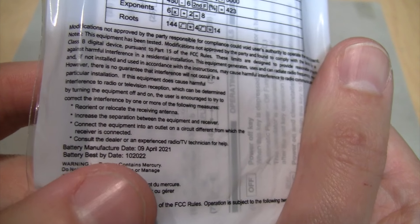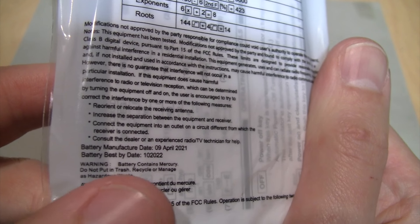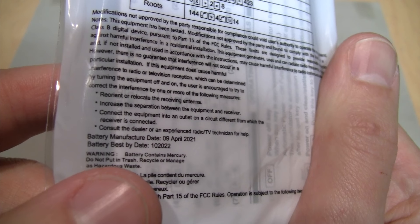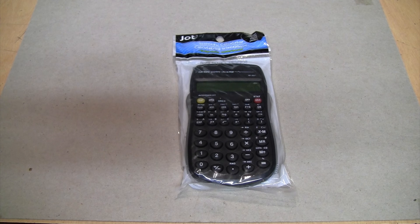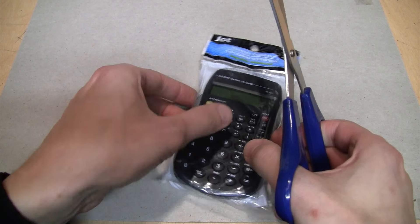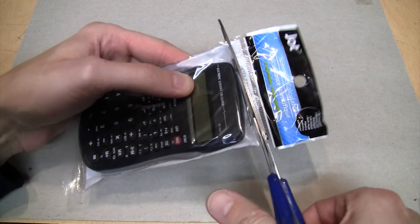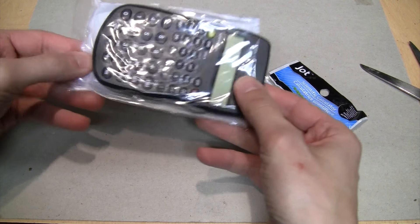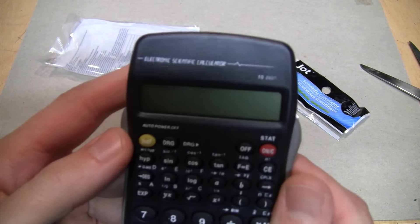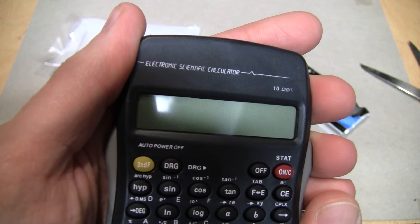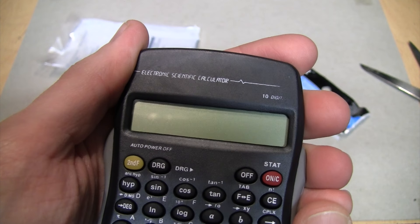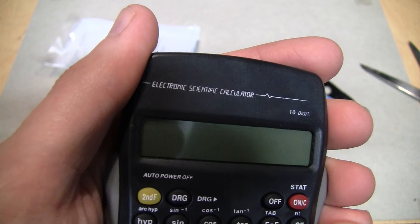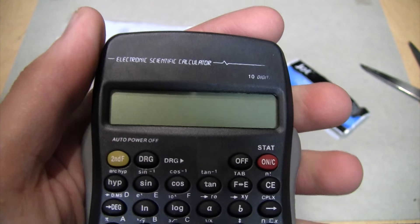If you compare it to a standard four function calculator, it's about the same size. On the back you can see imported by Greenbriar International, which is the company that runs Dollar Tree. They even list the exact date that the battery in it was made: the 9th of April 2021. And it says the battery contains mercury. So let's unbag it and take a closer look.